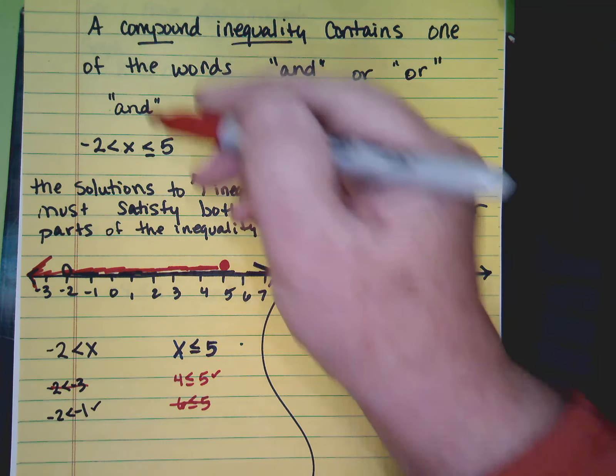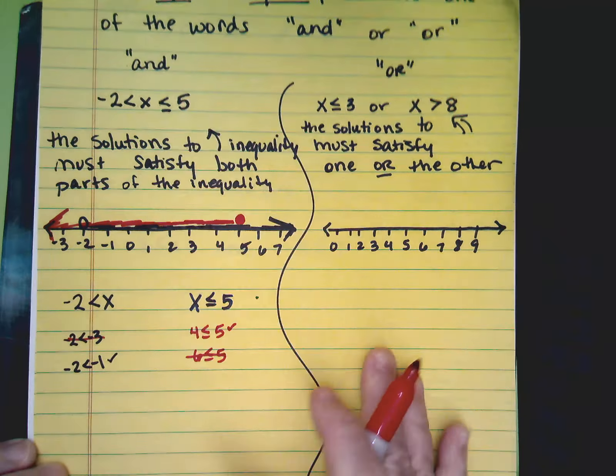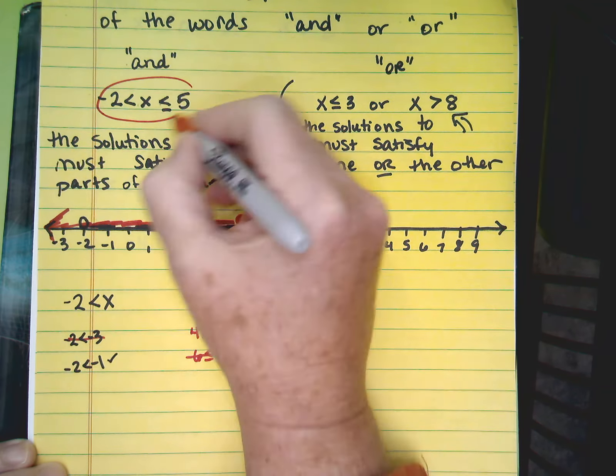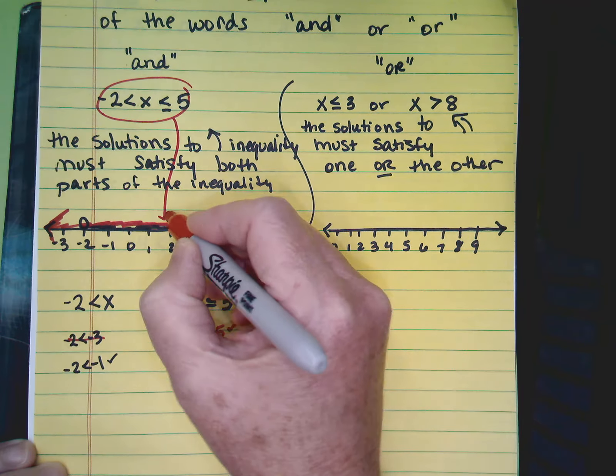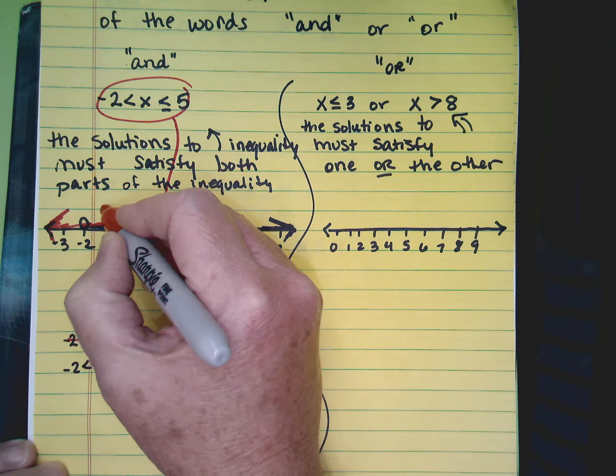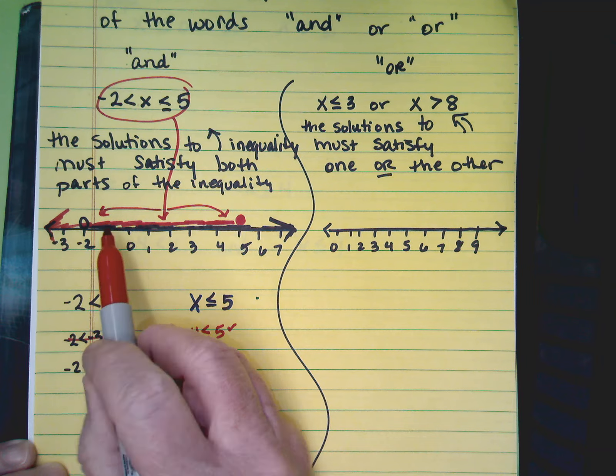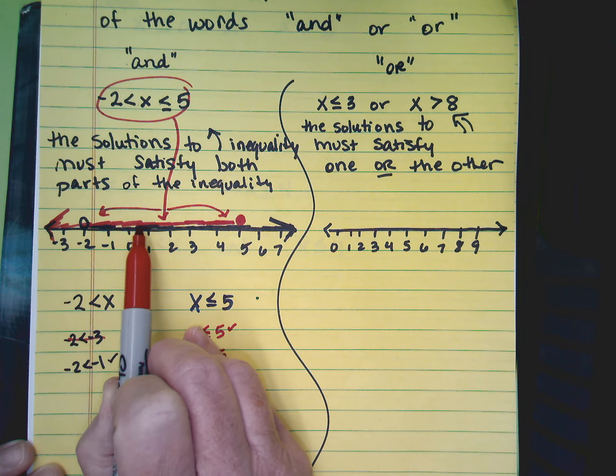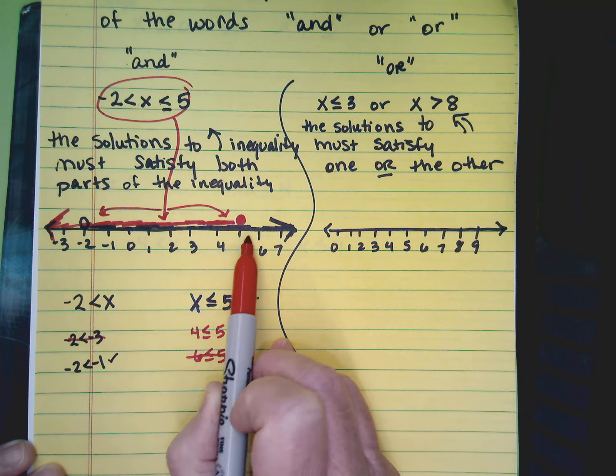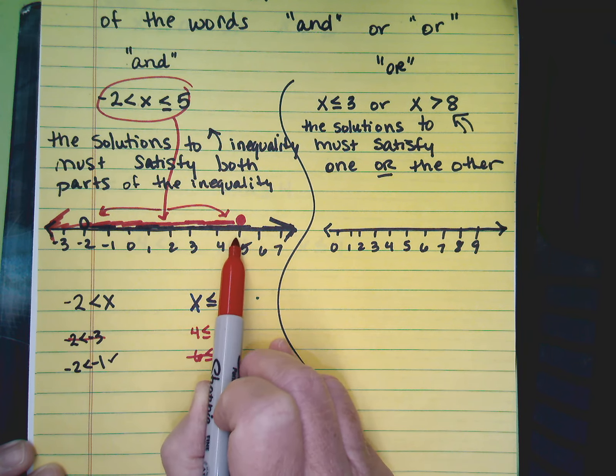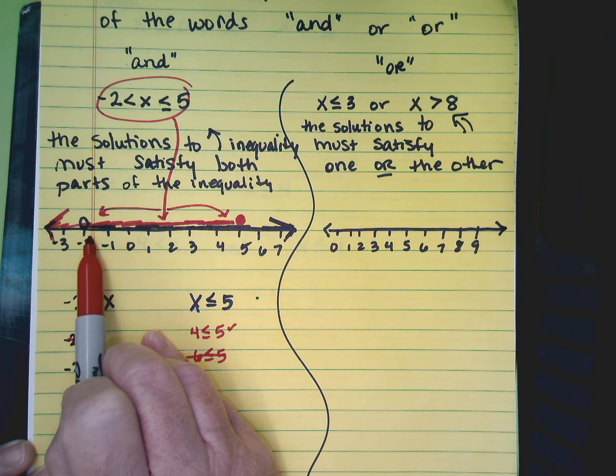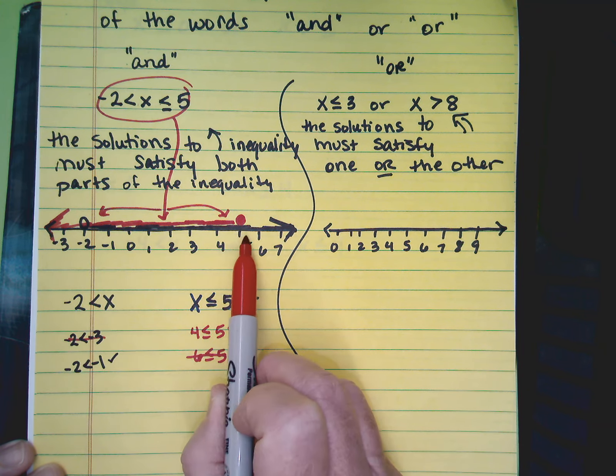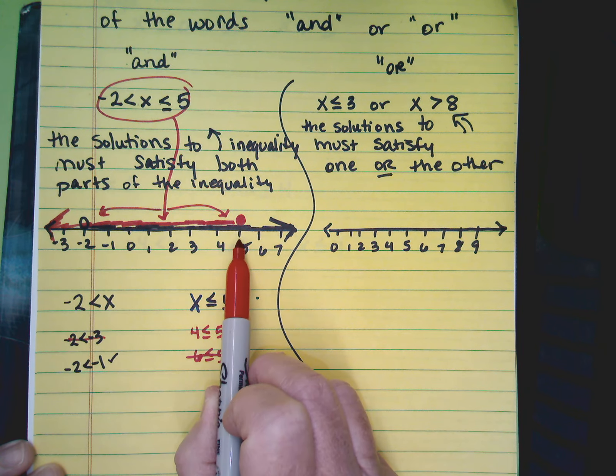Now, the solution to the whole problem is the part of the graph that is covered by both red and black shading. It goes from 5 all the way down to almost negative 2. See, that circle is open, so it doesn't include negative 2. It does, however, include the 5.